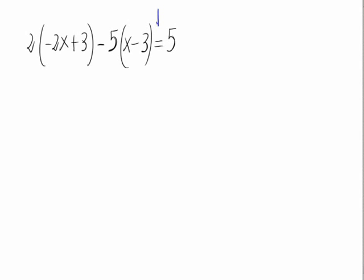To solve this equation we can observe we have a parenthesis, but in front of that parenthesis we have a 2 that multiplies the parenthesis. 2 times negative 2x which is negative 4x and now 2 times 3 which gives us 6.